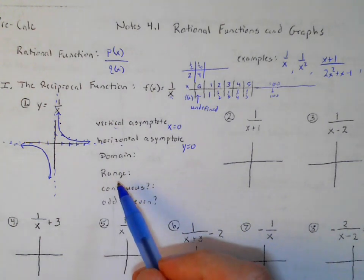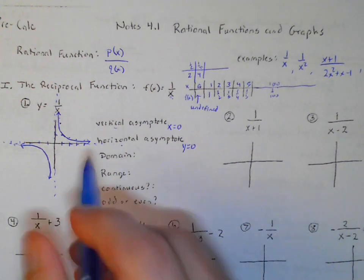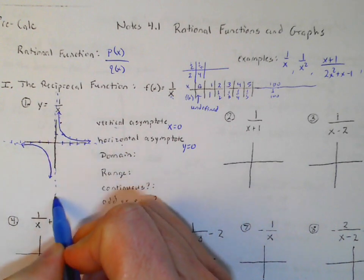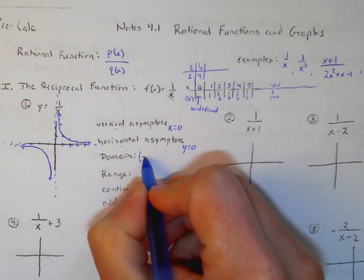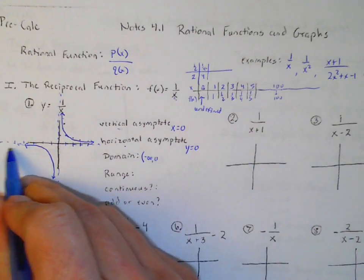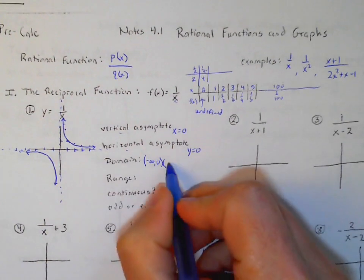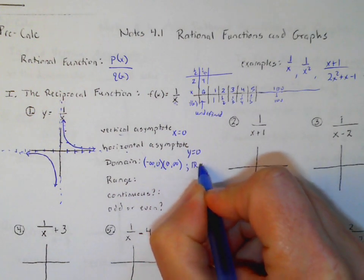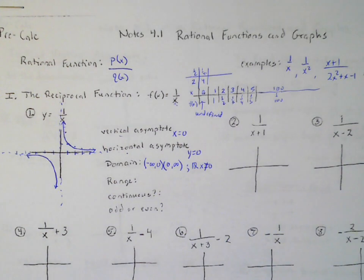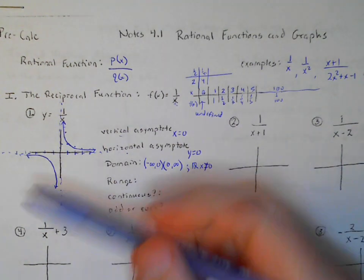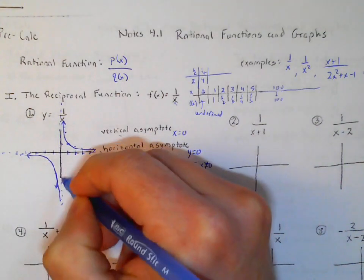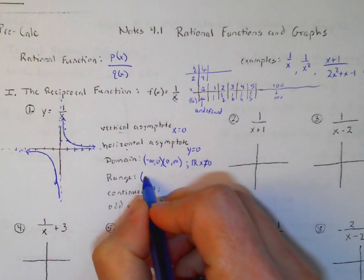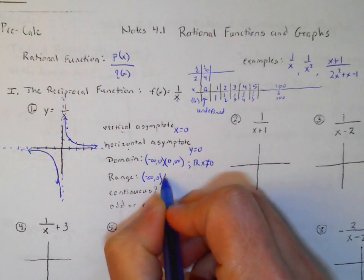Let's talk about domain and range. Our domain: all these numbers work, but there's no value at x equals zero. In interval notation, it goes from negative infinity to zero, and then from zero to infinity — or another way: all real numbers but x cannot equal zero. The range is also from negative infinity to zero and from zero to infinity, since y never equals zero either.